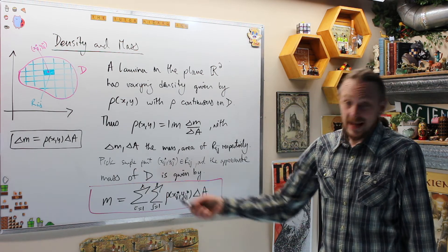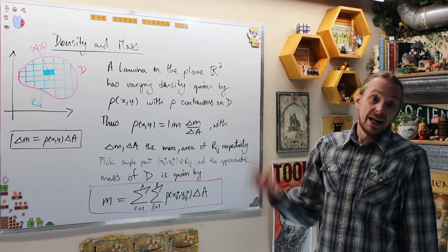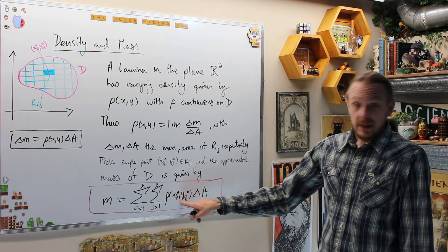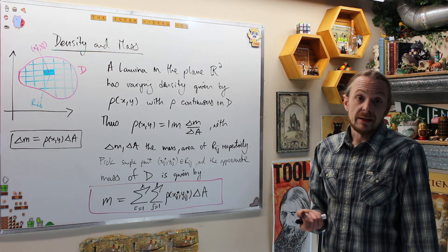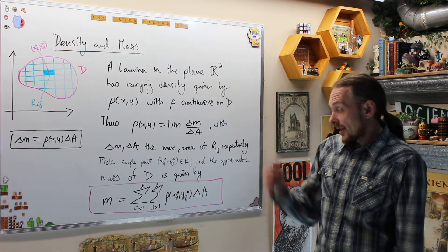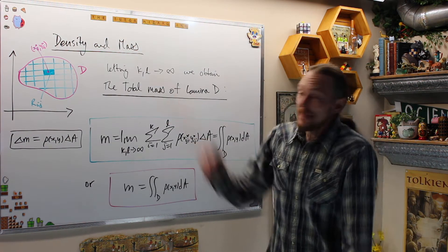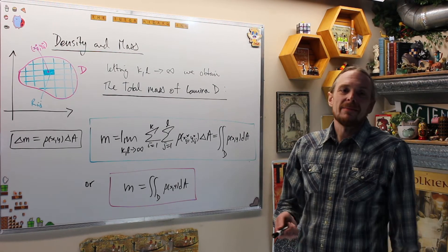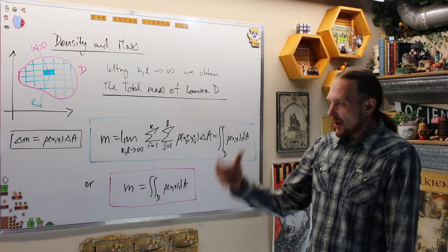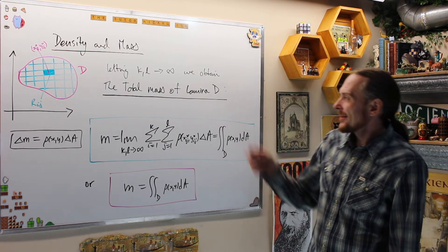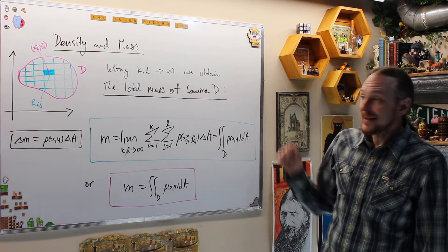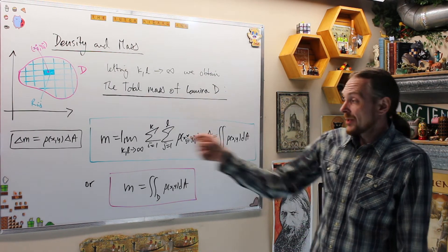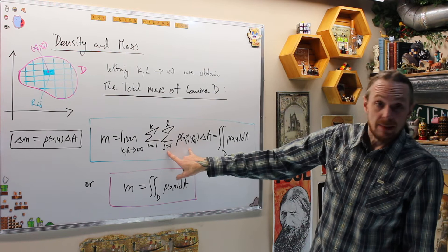We're going to push k and l to infinity and we will get the mass as a double integral with ρ as the integrand. Pushing k and l to infinity in that approximate double sum, we get the total mass of this lamina D, which is the limit of this double sum.